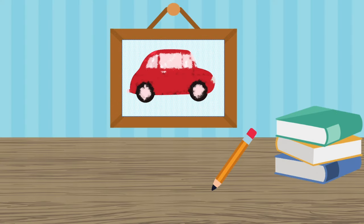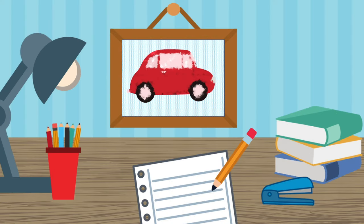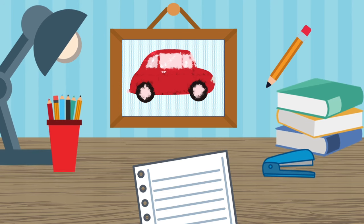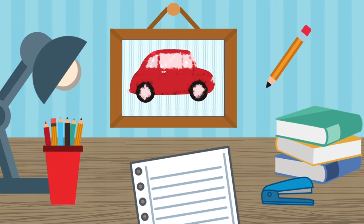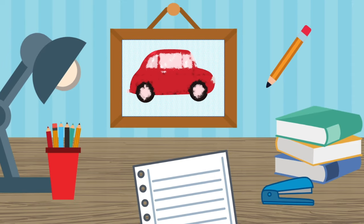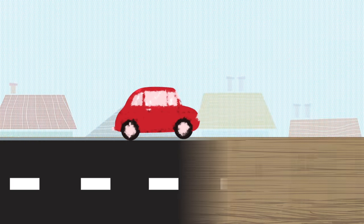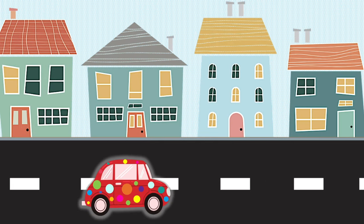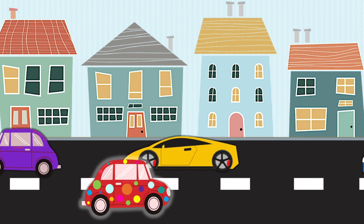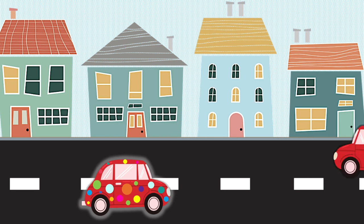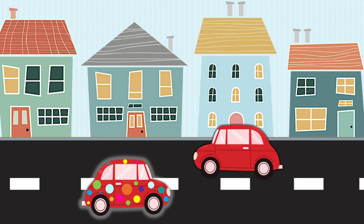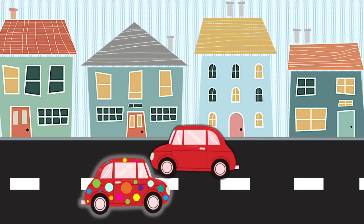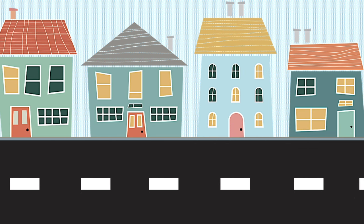Take a look around the room you're in right now. What do you see? Whatever is closest to you, try picking it up. Did anything else in the room move when you did that? Unless you have mind control, probably not. This is because objects around you can be changed without affecting any other objects. You can lift your pencil or paint a car without affecting anything else.